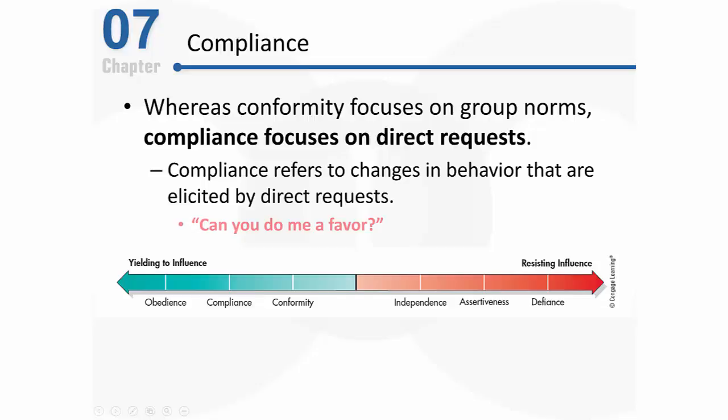As we discuss compliance to specific direct requests, think about some of the requests that you hear on a daily basis. They often start out with something like 'hey, can you do me a favor?' Sometimes people are interested in collecting money and might say 'hey, are you interested in donating $10 to the United Way?' In these next several sections we're interested in talking about factors that make you either more or less likely to comply with those requests.